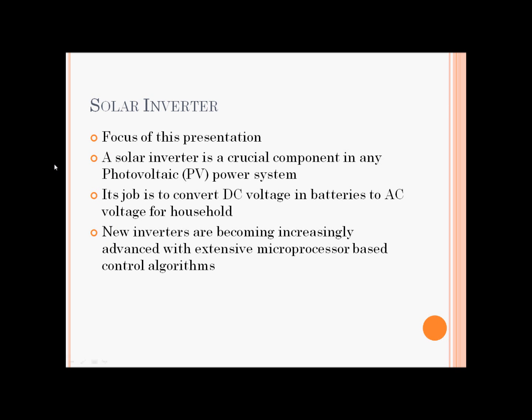A little bit about the solar inverter. A solar inverter is a crucial component in any photovoltaic power system. Its job is to convert DC voltage in batteries to AC voltage for household appliances. It is a purely solid-state device with no moving parts. All it has is power electronics and control algorithms. New inverters are becoming increasingly advanced with extensive microprocessor-based control algorithms.